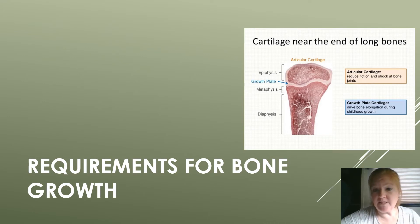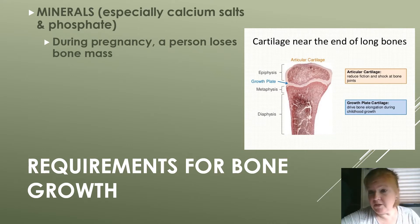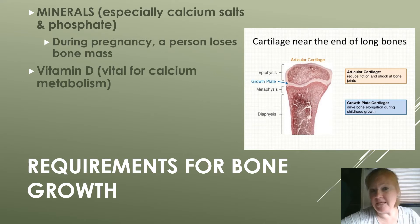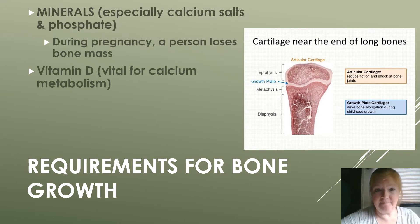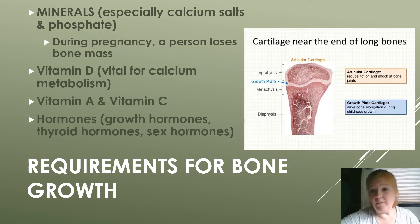The requirements for bone growth include minerals, especially calcium salts and phosphate. During pregnancy, a person loses bone mass because they are literally growing another human being. Vitamin D is vital for calcium metabolism — calcium cannot be metabolized correctly without it. We also need vitamin A and vitamin C, and hormones like growth hormone, thyroid hormone, and sex hormones that help bones grow at different times.